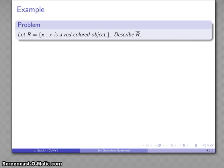Now, if the universal set is not given or it's not entirely clear what it is, we can do the following. Let R be a set of things where what we're talking about is a red-colored object. Describe the complement of R.